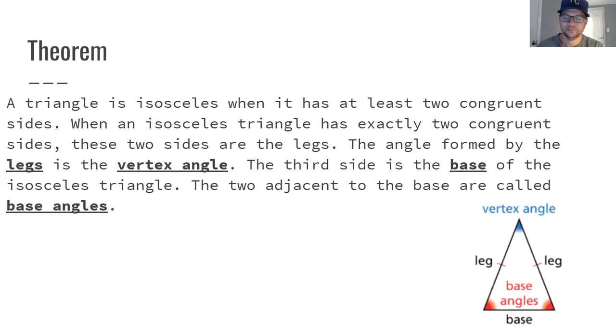So you've probably seen and are familiar with isosceles and equilateral triangles before, but isosceles triangles can have exactly two congruent sides. They could have more, so they could have three as well. When they have exactly two sides, those sides are called the legs.